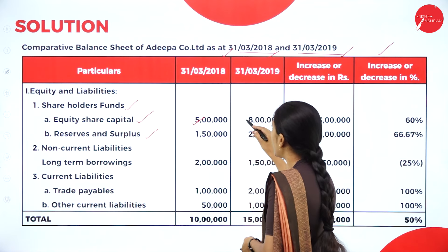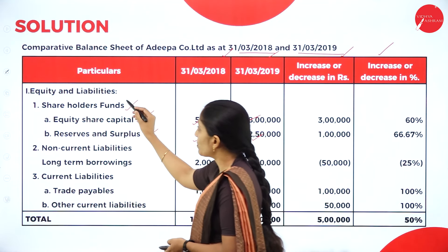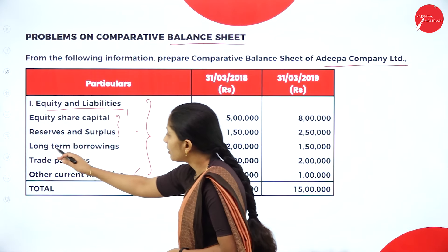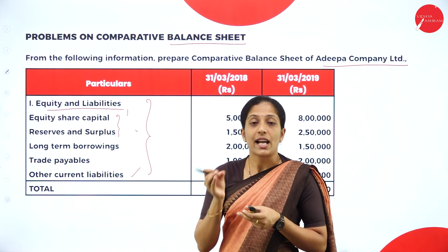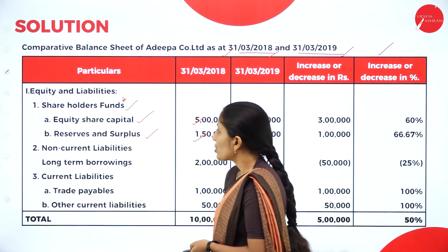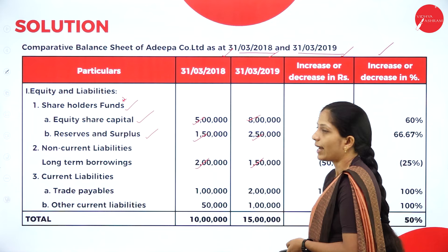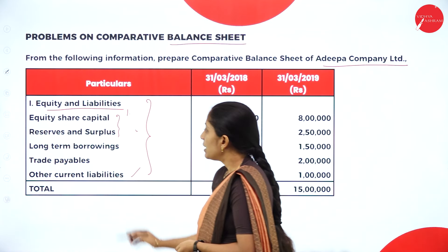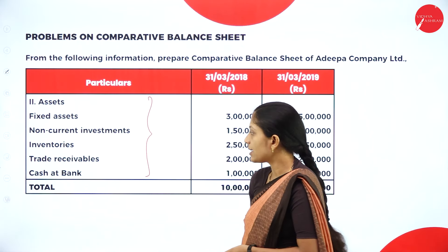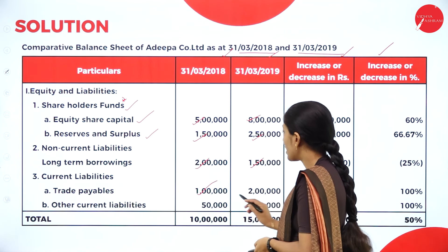Write the respective amounts: 5 lakh, 8 lakh, 1 lakh 50,000, and 2 lakh 50,000, as given in the question. The heading shareholders fund was missing — you have to add it. Next, they have given long-term borrowings directly. The heading that comes for long-term borrowings is non-current liabilities, which you must write as the second heading. Under non-current liabilities, write long-term borrowings with amounts 2 lakh and 1 lakh 50,000.